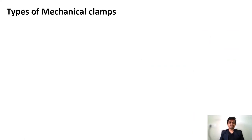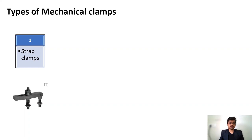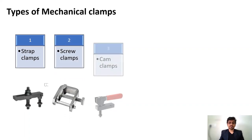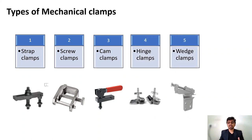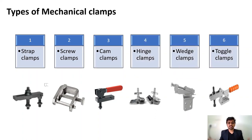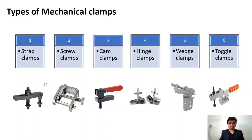Let's look at the types of mechanical clamps. First we have strap clamps, then screw clamps, cam clamps, hinge clamps, wedge clamps, and toggle clamps. These differ based on their construction, their point of application of force, and the mechanism used for applying the force. Today we will focus on strap clamps.